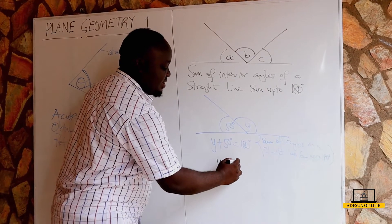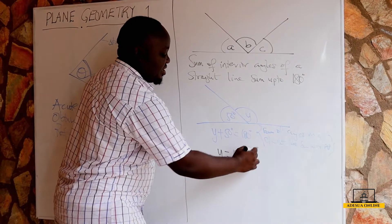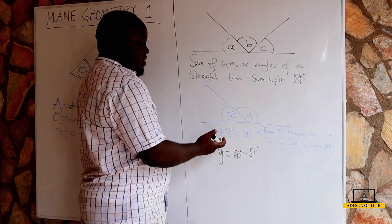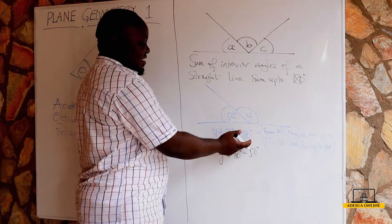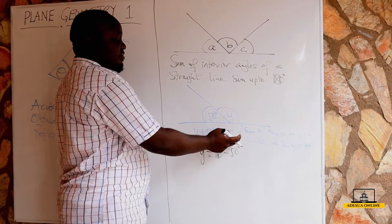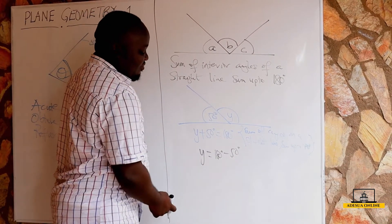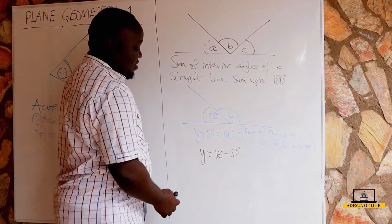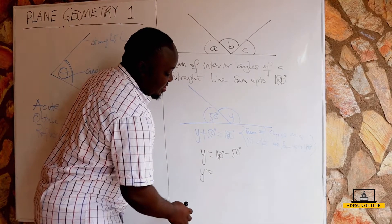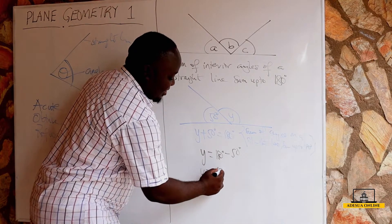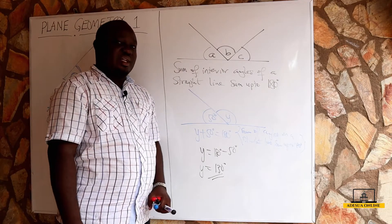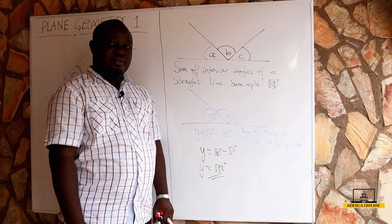So, y is equal to 180 minus 50 degrees. Using the property of equality — whatever we do to the left-hand side we do the same to the right-hand side — if we subtract 50 from both sides, y equals 180 minus 50, which is 130. So y is equal to 130 degrees. I'll take several examples and you can also try them out yourself.